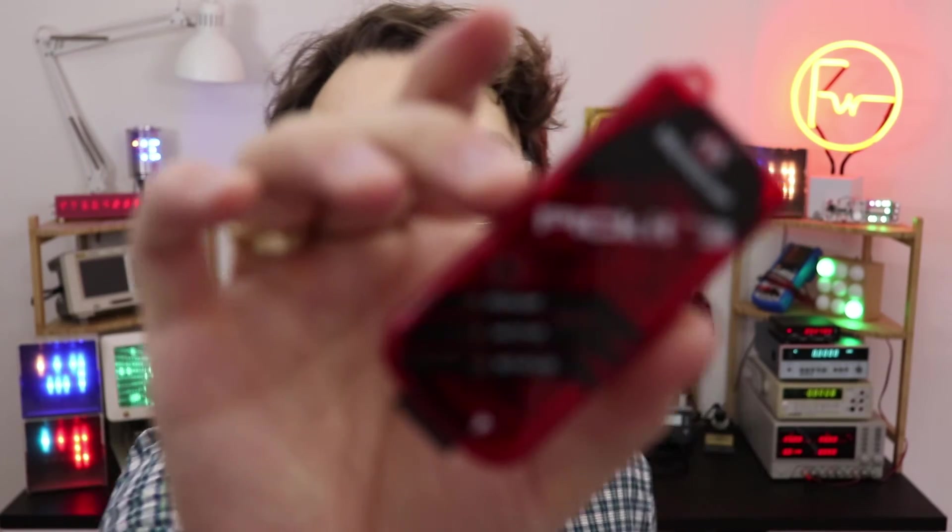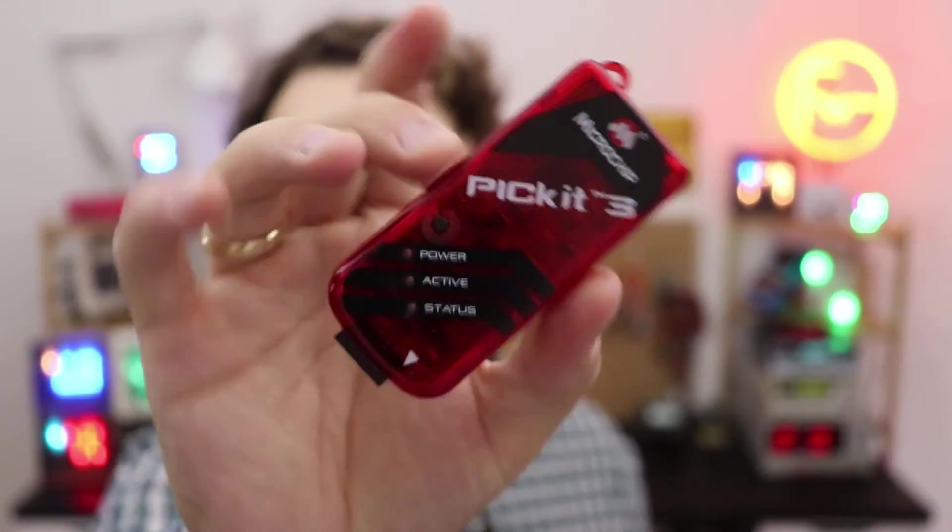So we're done with building the clock but of course nothing happens yet when we turn it on because we need to write a program first. And for that we need three different things. We need the MPLAB IDE to write the code. We need the XC8 compiler to turn the code into something that the microcontroller can understand and that's usually called a hex file. And then we need the MPLAB IPE to take that hex file and put it onto the controller. And for that last part we also need the PICkit 3. Now I know that this all sounds a little bit scary and overwhelming and if you feel that way don't worry I have a very detailed introduction video for you right here that walks you through all the basic steps.